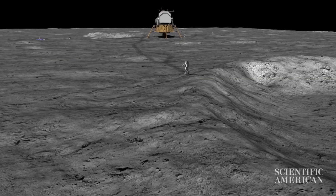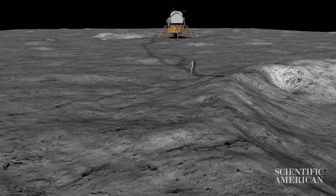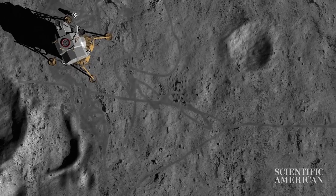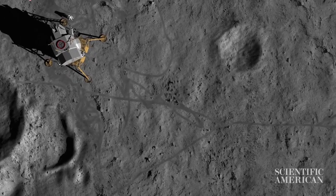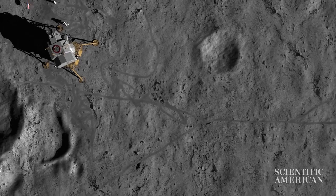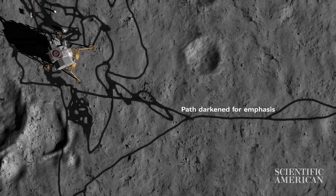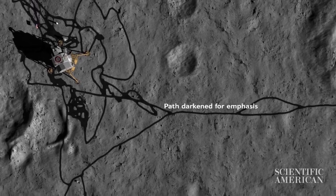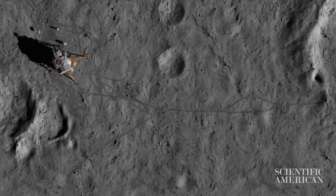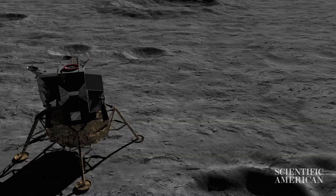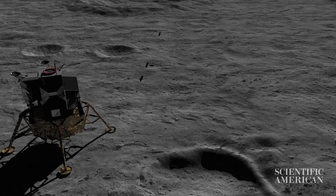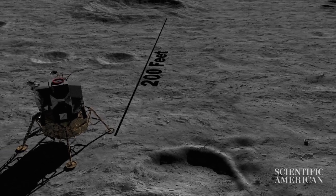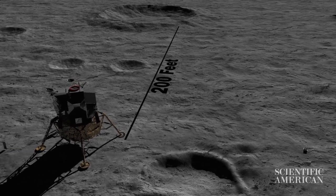As the two astronauts moved about the surface, they left behind a trail of disturbed moondust. This darkened trail can still be seen by the Lunar Reconnaissance Orbiter, an echo of the history they made. From this record, we can see that the farthest trip from the Eagle was an unplanned jaunt by Armstrong to the edge of Little West Crater, a distance of about 200 feet.